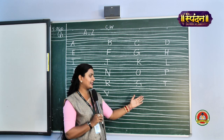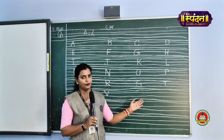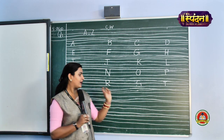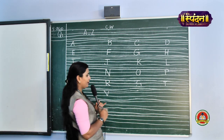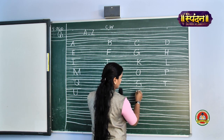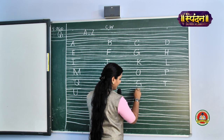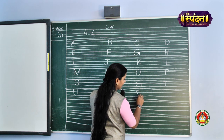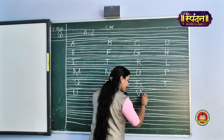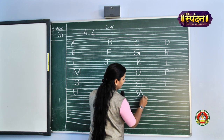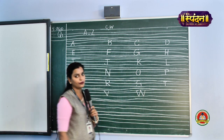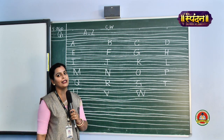Our next alphabet is alphabet W. W is two V's. We will start just below alphabet S. Start from the pink line, bring it to the second black line, then again go back to the pink line, then again come back to the second black line, and then again go back to the pink line. This is alphabet W.